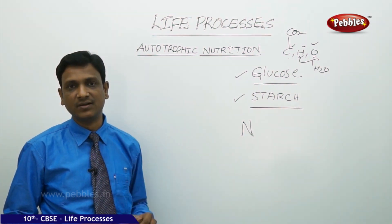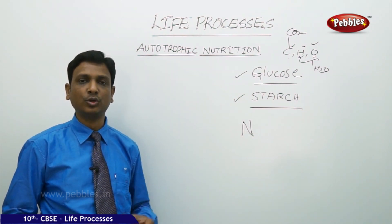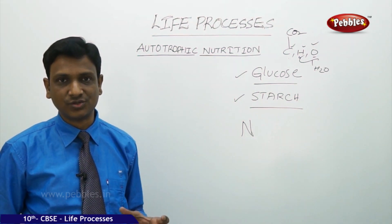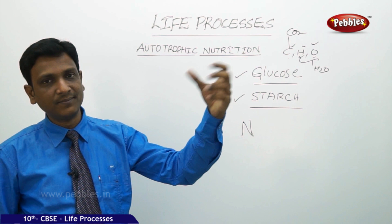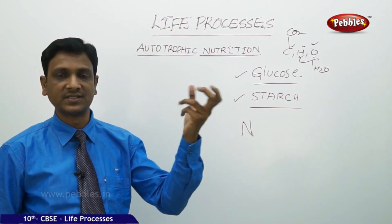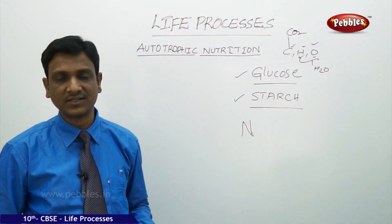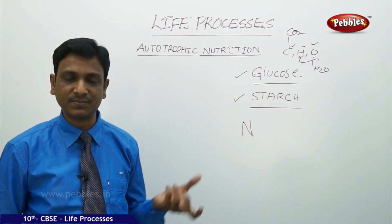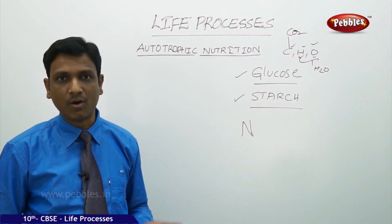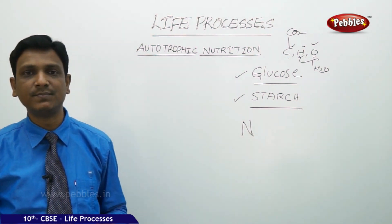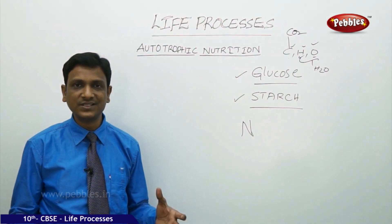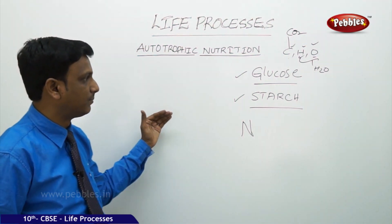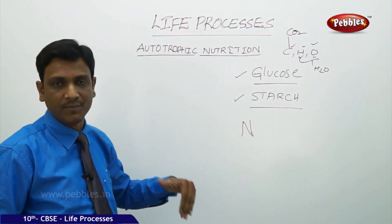Soil is the source of all these minerals. Nitrogen, the most important mineral for plant growth, reaches the soil from the atmosphere by physical processes like lightning and by biological processes like nitrogen-fixing bacteria. Plants use inorganic nitrites and nitrates present in the soil, or nitrogenous compounds formed by nitrogen-fixing bacteria. In this way, atmospheric nitrogen is fixed into the soil.